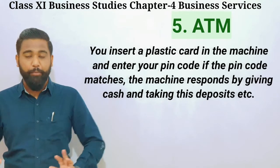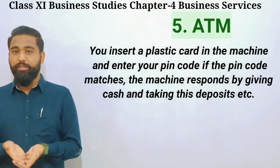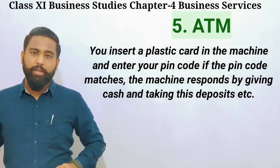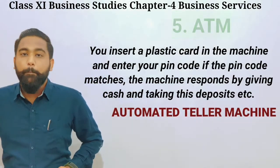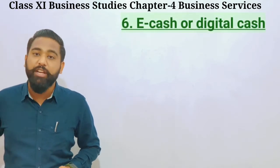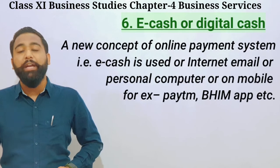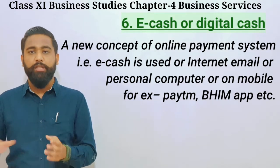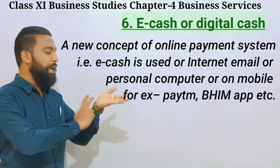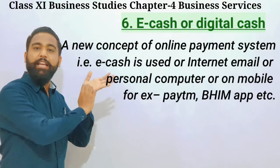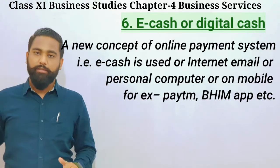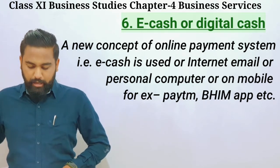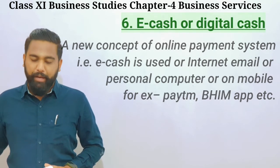The next is ATM — you already know its functions. The full form of ATM is Automated Teller Machine. After that is e-cash, or digital cash. You must have heard about Paytm and BEAM app — these provide electronic cash. The money is not physical; it is just an electronic number in your wallet with which you can buy things. E-cash is used over the internet, email, personal computer, or mobile — for example, Paytm, BEAM, etc.